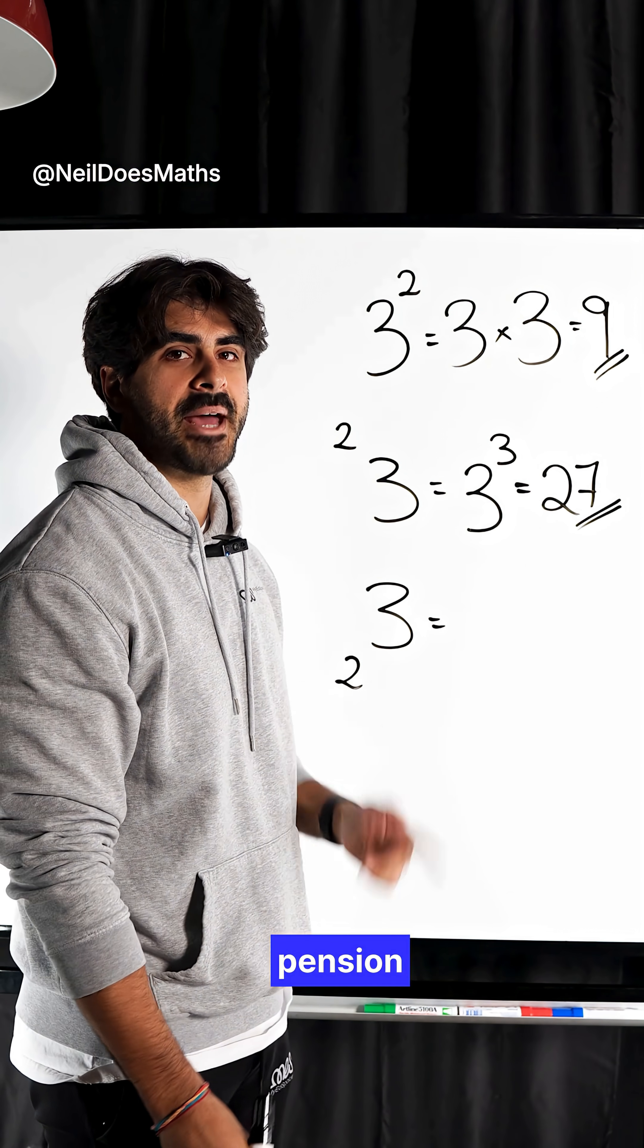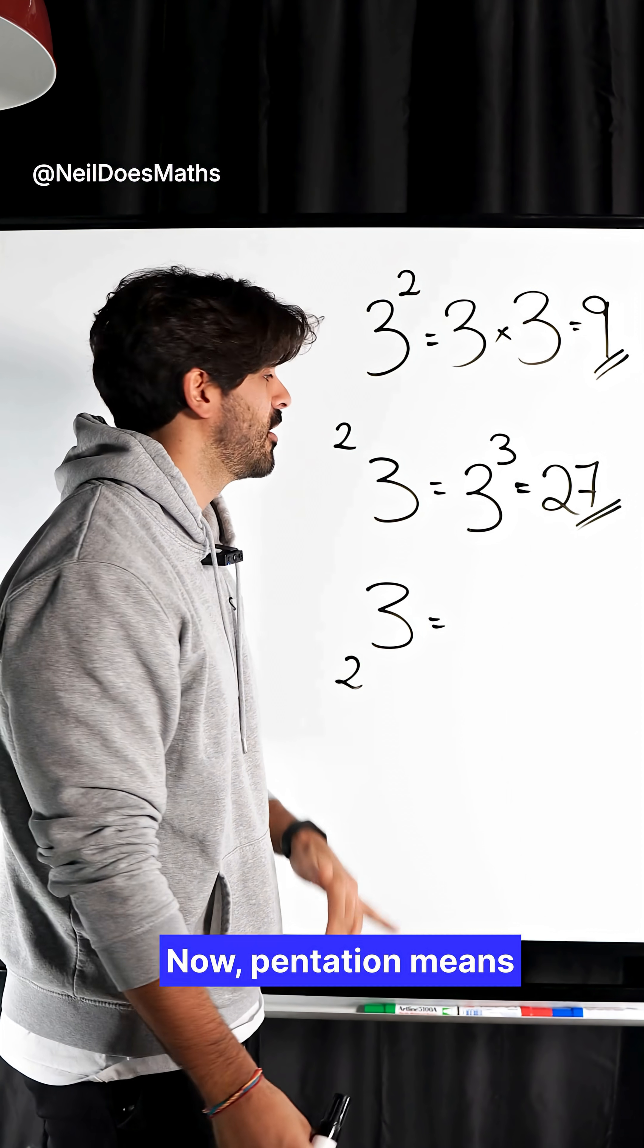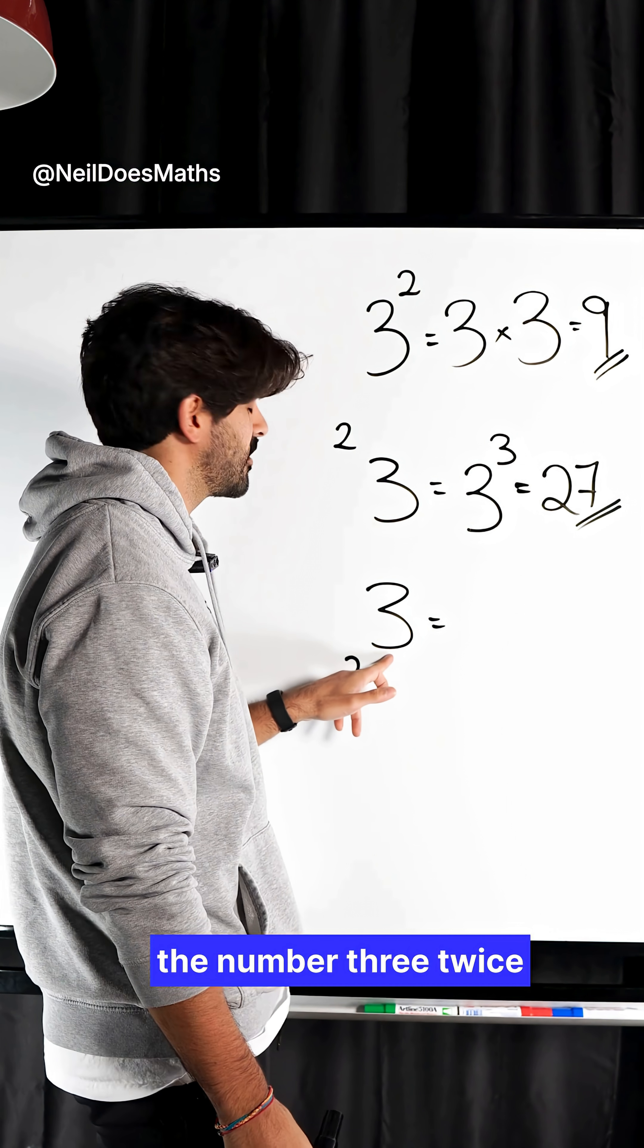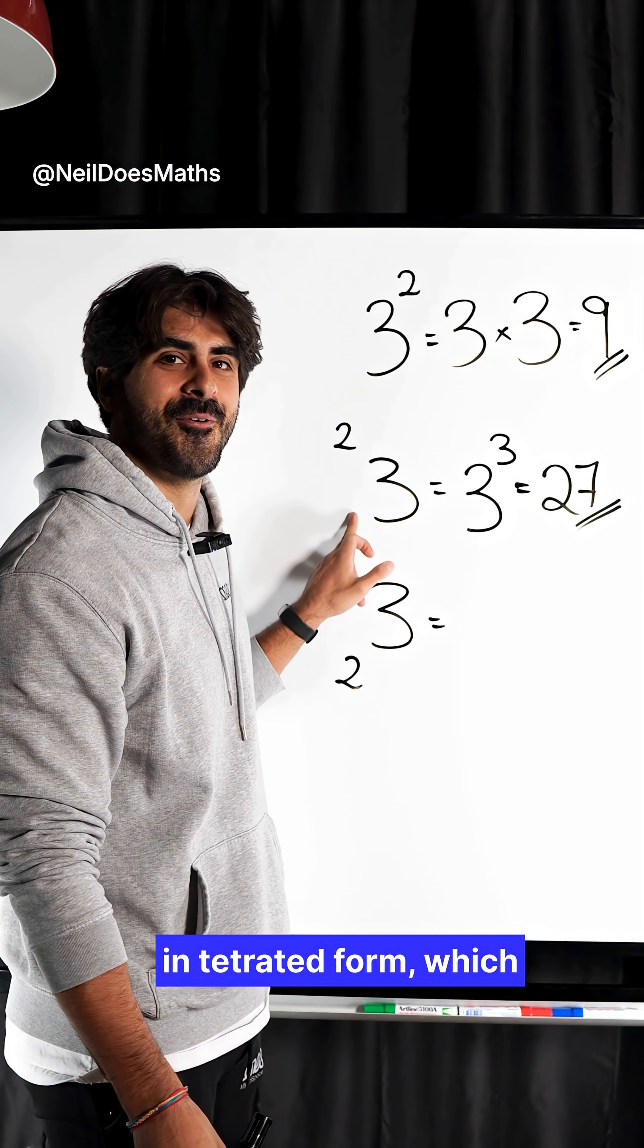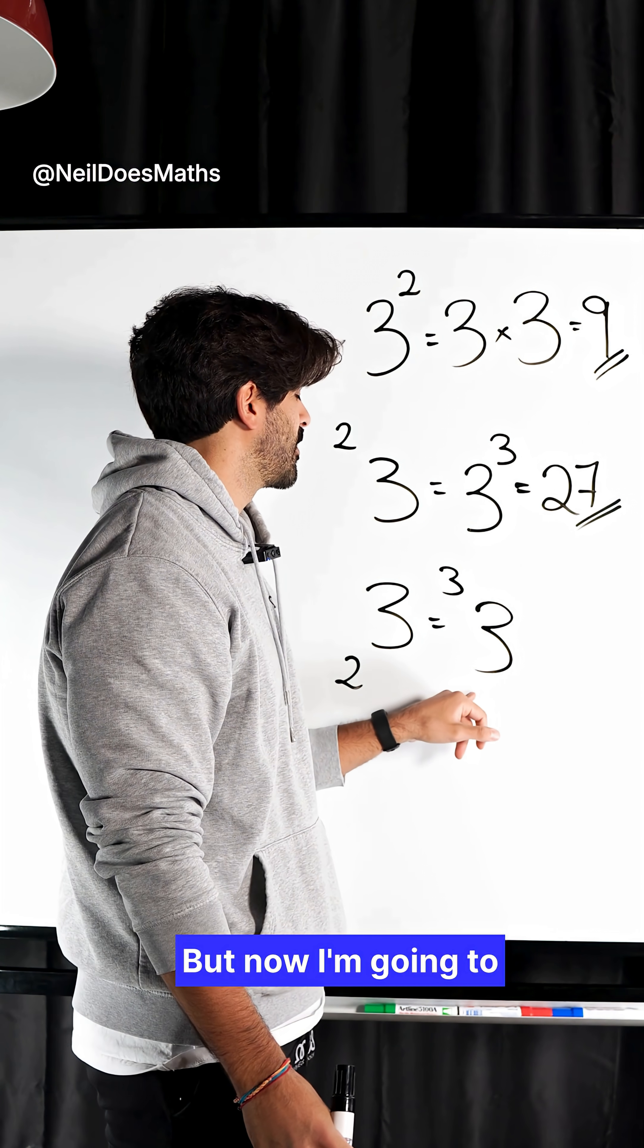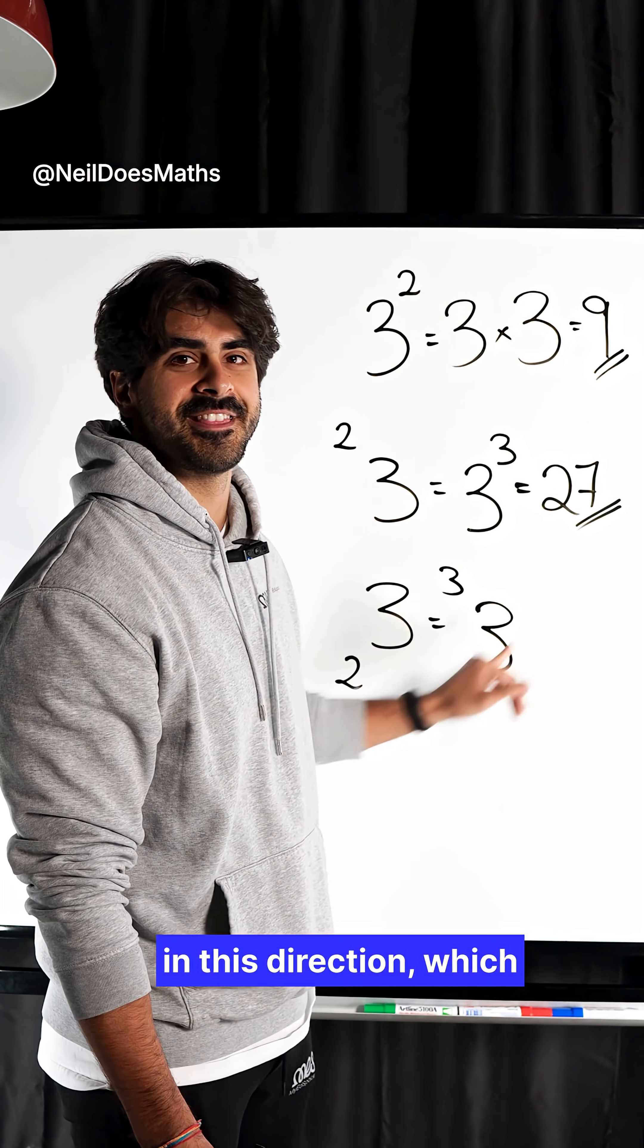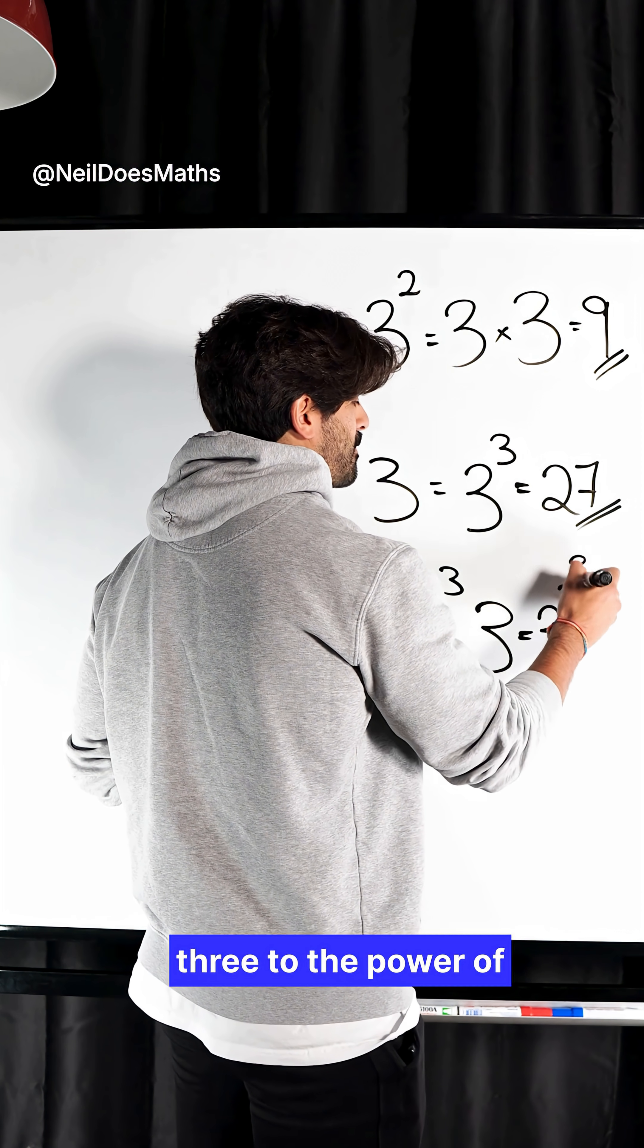This is known as pentation. Pentation means repeated tetration. So we're rewriting the number three twice in tetrated form, which means I'm writing three, not this way. I'm doing a backwards power tower. But now I'm going to write three as part of a power tower three times in this direction, which is three to the power of three to the power of three.